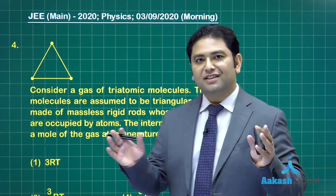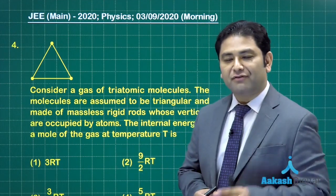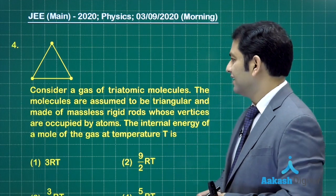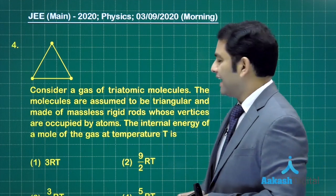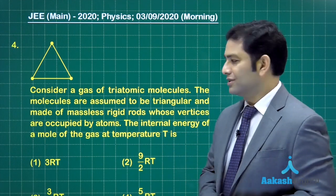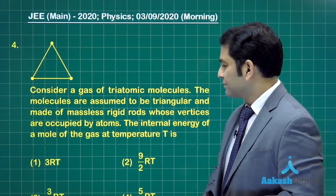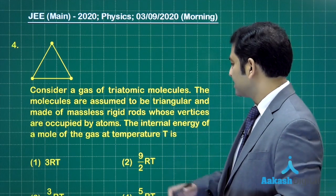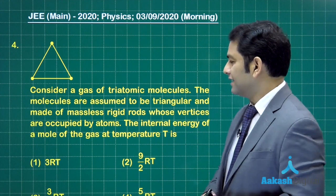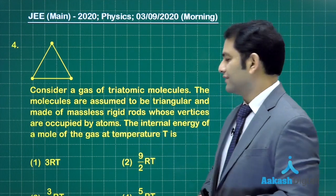The fourth one is very straightforward, derived from kinetic theory of gas. There's a gas of triatomic molecules and everything has been given. The remaining parameters we need to calculate are the internal energy of a mole of the gas at temperature T.